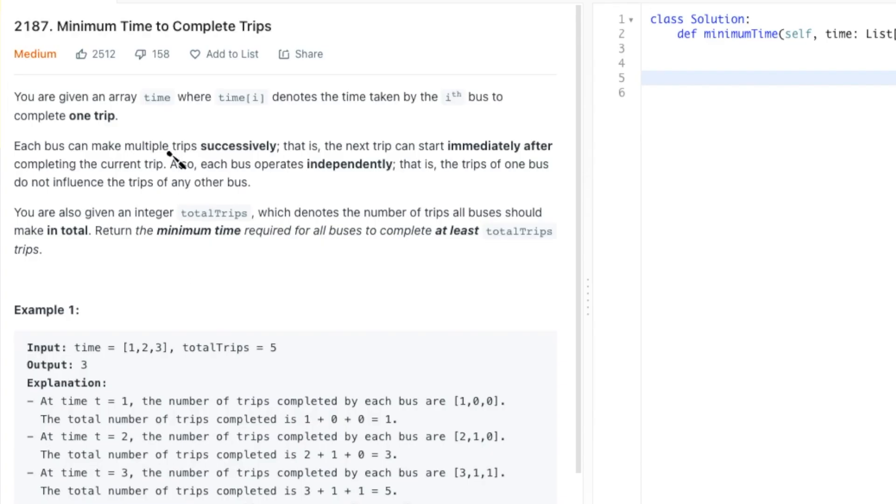So let's try another problem. This time we'll do LeetCode 2187, minimum time to complete trips. You're given an array of time where time i denotes the time taken by the ith bus to complete one trip.